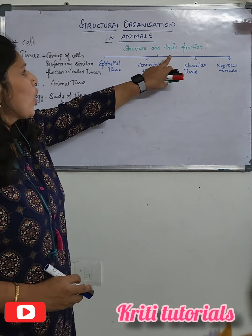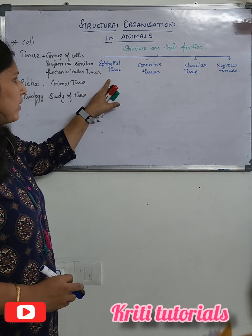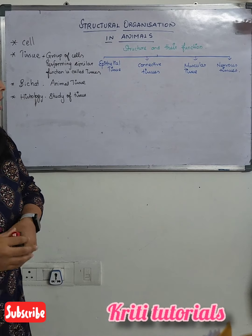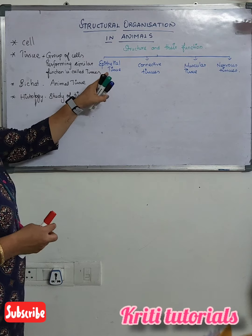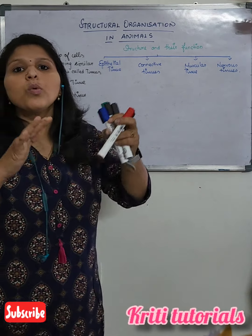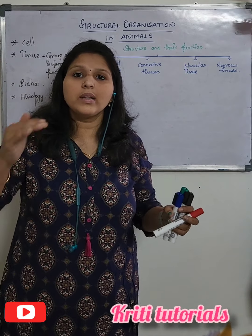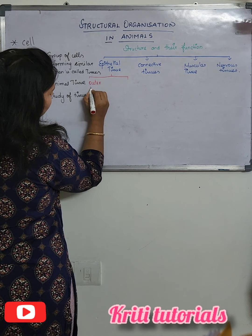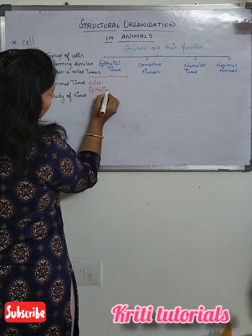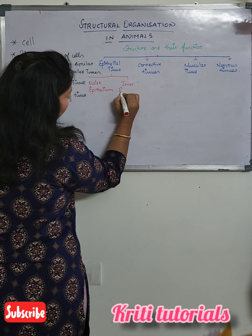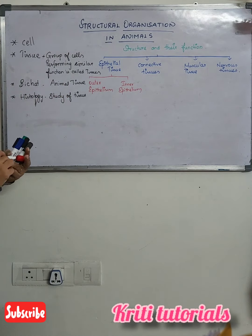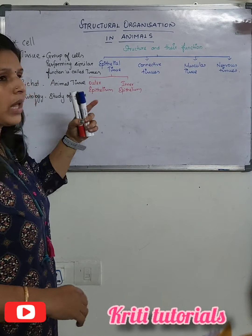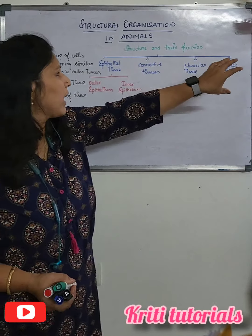Coming to epithelial tissues — epithelial tissues generally form the outermost covering of the body and are present in the lining of the body. They are divided into outer epithelium and inner epithelium. There are many different points to be discussed about epithelial tissues, which we will cover in upcoming videos. In this video, we will just take up the different types of tissues.